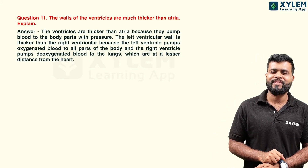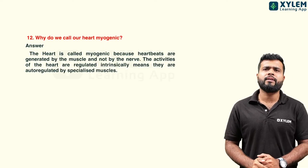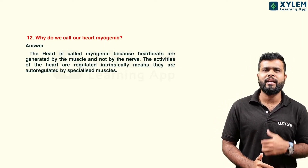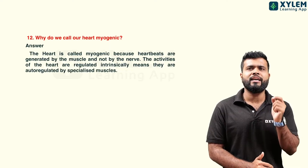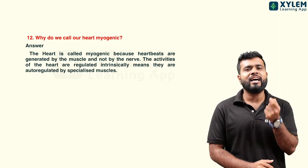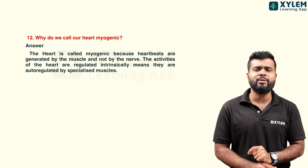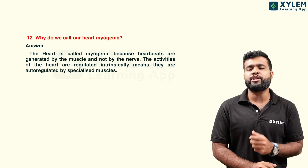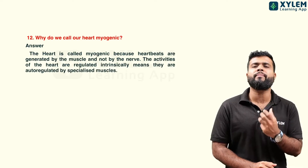How is our heart myogenic? Our heart controls its beat through its own muscles. Heart action potential is generated by the heart muscles themselves — it is not dependent on the nervous system. This is why the heart is called myogenic.